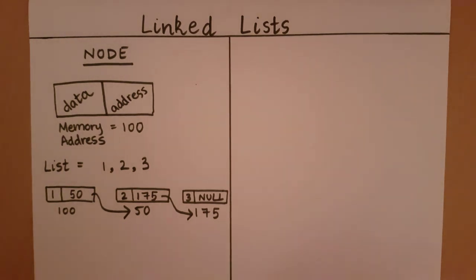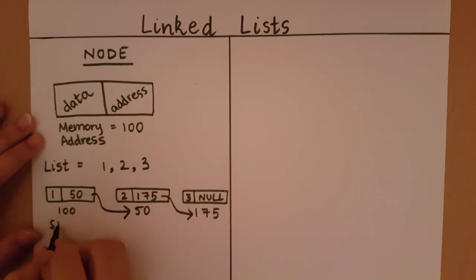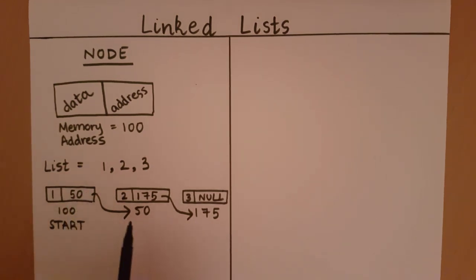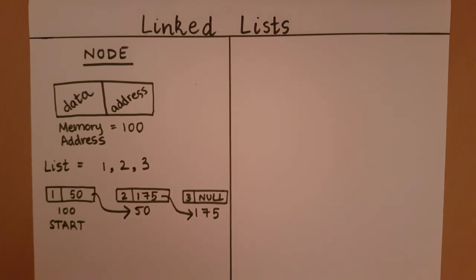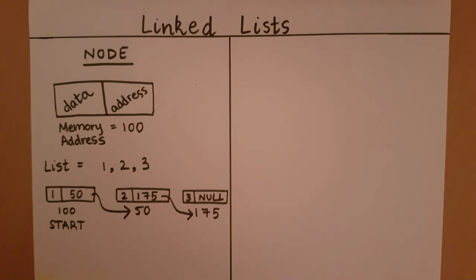It is easy to see that if we want to access all the elements of a list, we don't need to keep track of every element. In fact, if we keep track of just the first element — which we are going to call start — we can be redirected to the second, then the third. So having only the information of the first node, we can attain the information of all the other nodes in the linked list. It is enough to know just the starting node to access all other nodes.